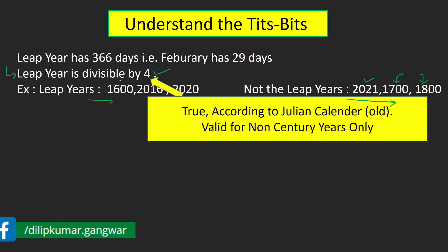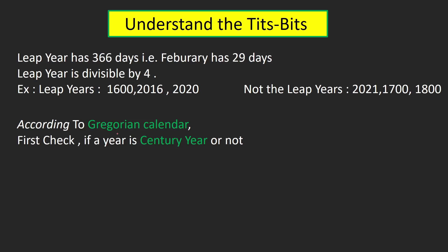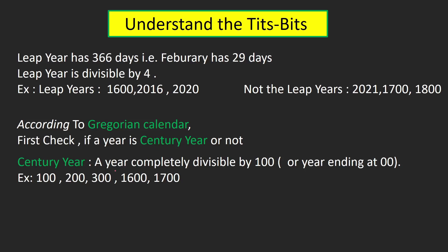Actually, the divisibility test by 4 is true but only according to the Julian calendar, and it is valid only for non-century years. For century years this condition is not valid. After the Julian calendar came the Gregorian calendar, and according to this calendar you first check whether a year is a century year or not, and after that you can proceed forward.